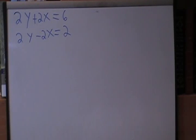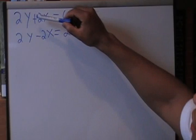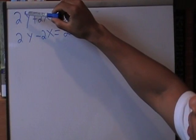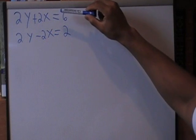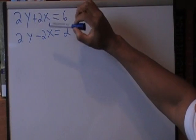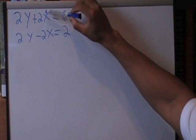Our goal here is to create opposite coefficients in one of our variables. If you look at the y variables, we have the coefficient of 2 in both equations. If you look at the coefficient for the x variables, we have a positive 2 and a negative 2. You can see these are opposite coefficients.